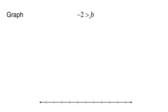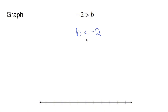Graph: negative 2 is greater than b. Whenever I graph inequalities, I want my variable on the left. My variable's not on the left, so how do we fix this? Let's use common sense. If negative 2 is bigger than b, then b is smaller than negative 2. You just flip everything. If negative 2 is greater than b, then b is less than negative 2. Now we have enough to graph.